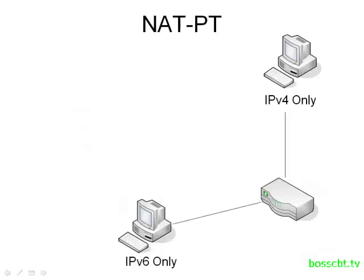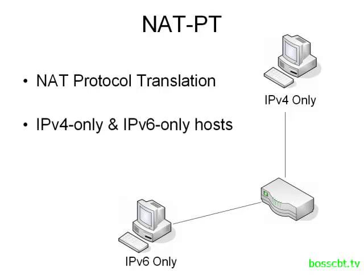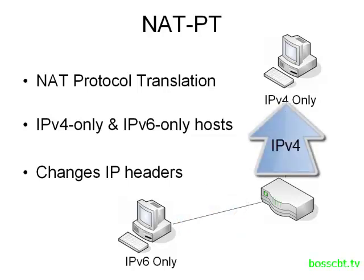Our last method is known as NAT-PT, where we're NATing a protocol — IPv4 to version 6, or in the other direction, IPv6 to IPv4. This method is commonly used when you have hosts that just cannot communicate because they don't both support a common protocol. In our diagram, one PC only supports version 4 and the other only supports version 6, so the router in between them has to perform the protocol translation. The IPv6 host, for example, can send a packet to the router, and the router will change the IP headers from version 6 to version 4 and deliver it to the IPv4 host.